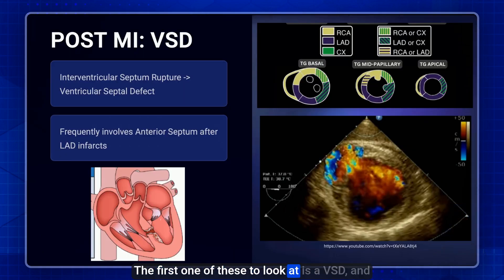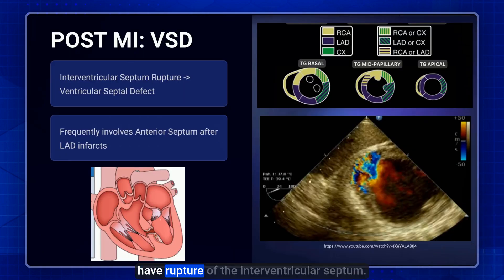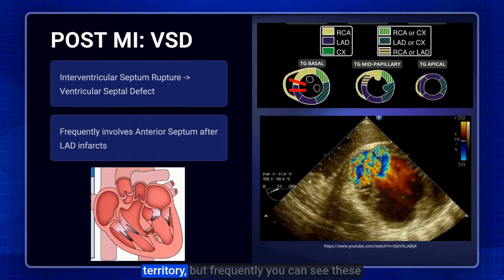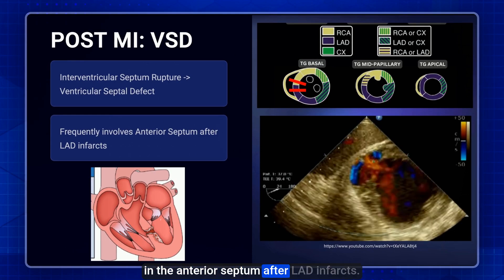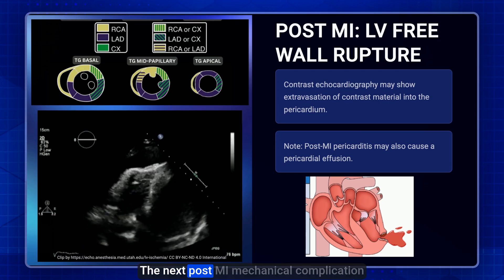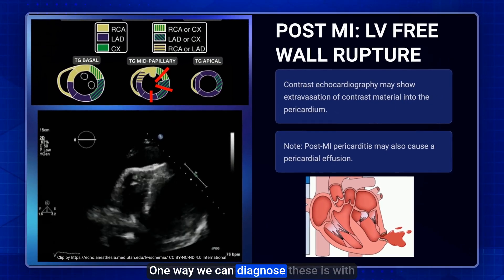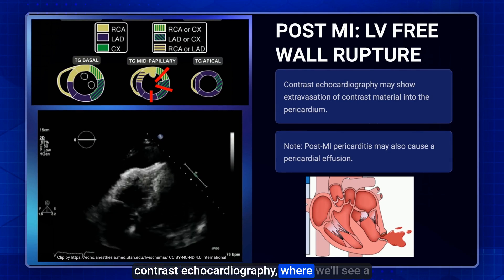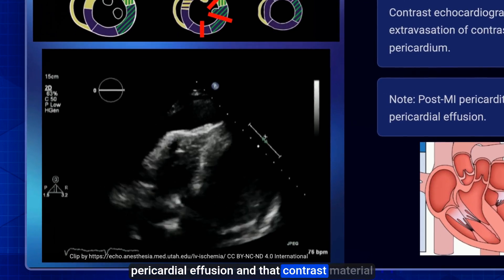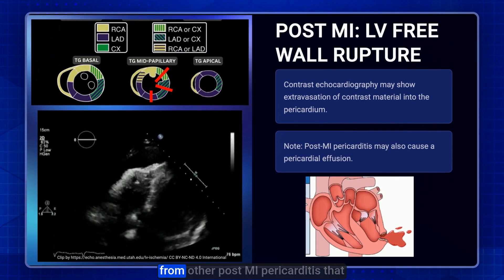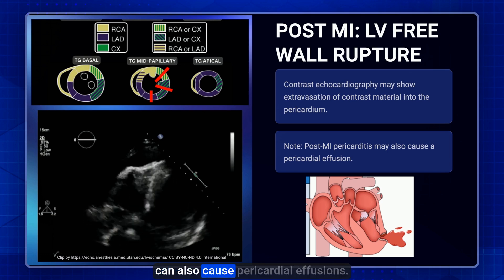A VSD occurs from rupture of the interventricular septum and can occur in the RCA or LAD territory; anterior septal VSDs are frequently seen after LAD infarcts. LV free wall rupture involves rupture of the free wall in the anterior, anterolateral, or inferolateral segments. Diagnosis can be made with contrast echocardiography, where contrast material is seen filling the pericardial space — differentiating it from post-MI pericarditis, which can also cause pericardial effusions.